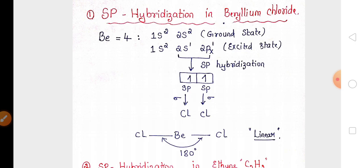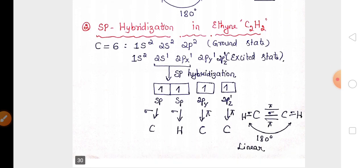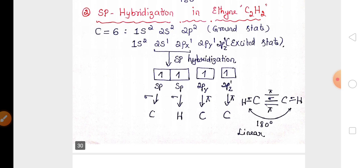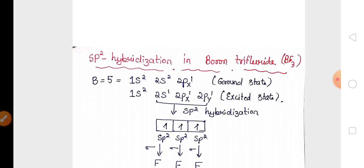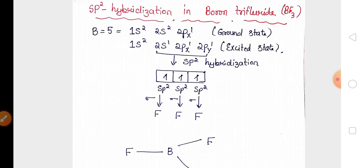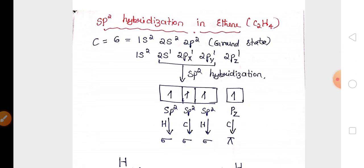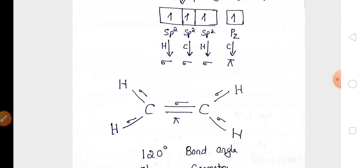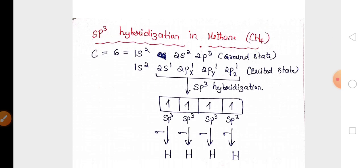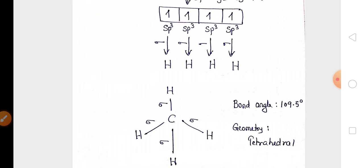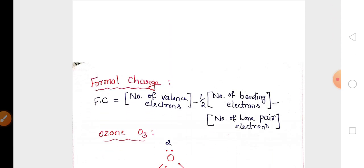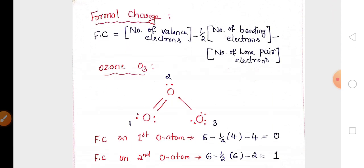The hybridization question could be: sp hybridization in beryllium chloride or sp hybridization in ethyne; sp² hybridization in boron trifluoride or ethene; or sp³ hybridization in methane — any one of these for three marks. Another compulsory question from this chapter is formal charge — you should remember the formula for formal charge.